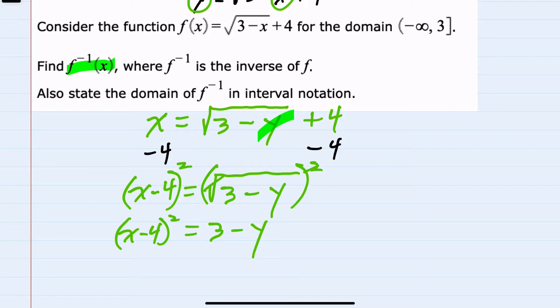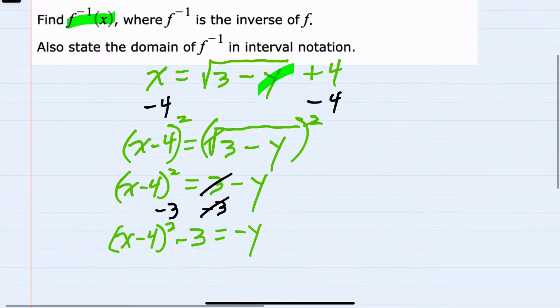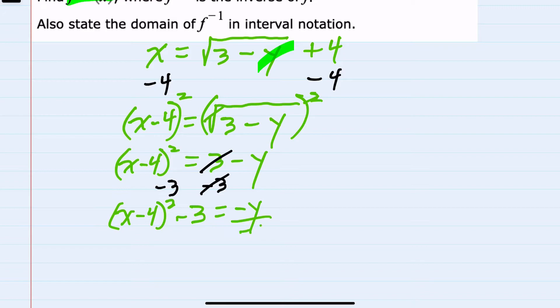Continuing to solve for y, I can subtract 3 from both sides. x minus 4 squared minus 3 equals a negative y. And then lastly, dividing both sides by a negative 1 will change all of the signs. So on the left-hand side, the x minus 4 squared will be negative and the minus 3 will be positive.